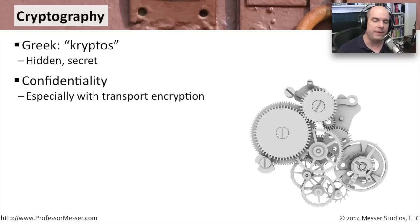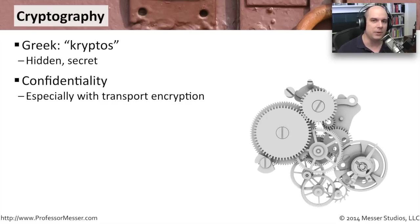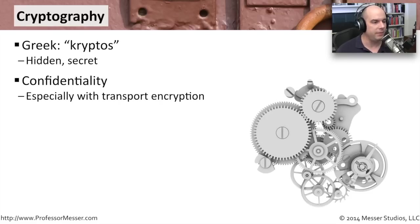There are a number of features that cryptography brings to the table. One is confidentiality — this is the one we normally think about. If we're going to send our credit card information across the Internet, we want to be sure that nobody in between would be able to see that information. Nobody's able to see it except for me and the person that I'm sending it to. Everything else completely confidential.